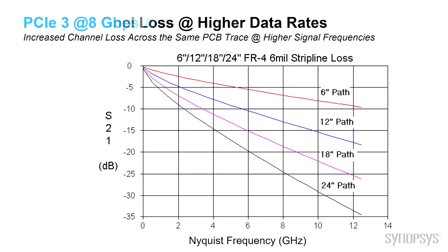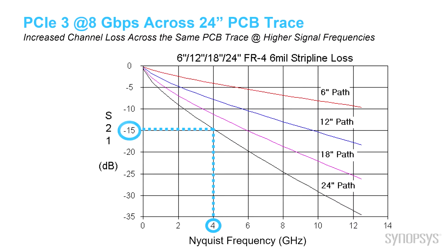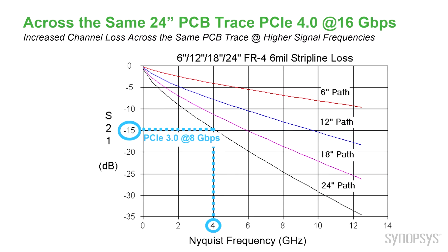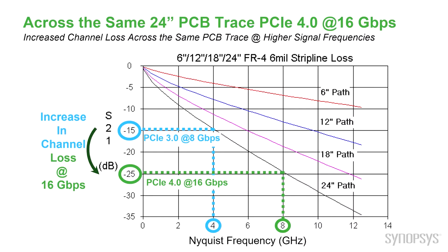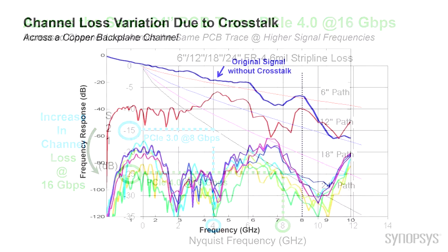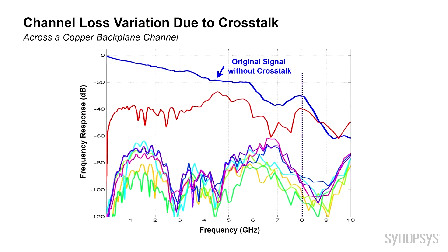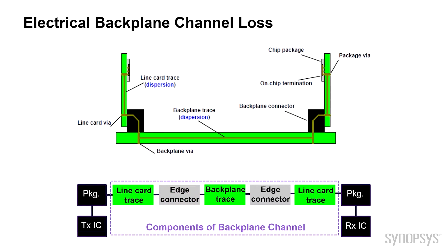With higher channel loss in a backplane, you may have the same PC board trace of, for example, 24 inches. At PCI Gen 3, you may have only 15 dB insertion loss, whereas the same trace running at twice the speed of 16 Gb/s may have a much larger insertion loss. The channel can have lots of crosstalk because the signals are going much faster. And as they are closer and closer with these higher data rates, you start having a lot of interference between the signals on the same PCB backplane. Electrical backplane channel loss can be due to dispersion, crosstalk, and reflection in this complex backplane environment.